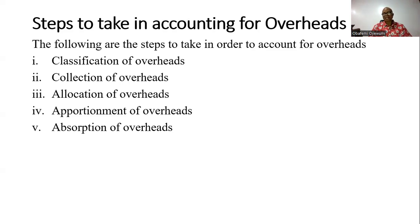So, steps to take in accounting for overheads. The following are the steps: the first one is classification of overheads, the second one is collection of overheads, then allocation of overheads, apportionment of overheads, and absorption of overheads. This particular topic is divided into three parts. The first part covers classification, collection, and allocation. Part two covers apportionment, and part three covers absorption of overheads.